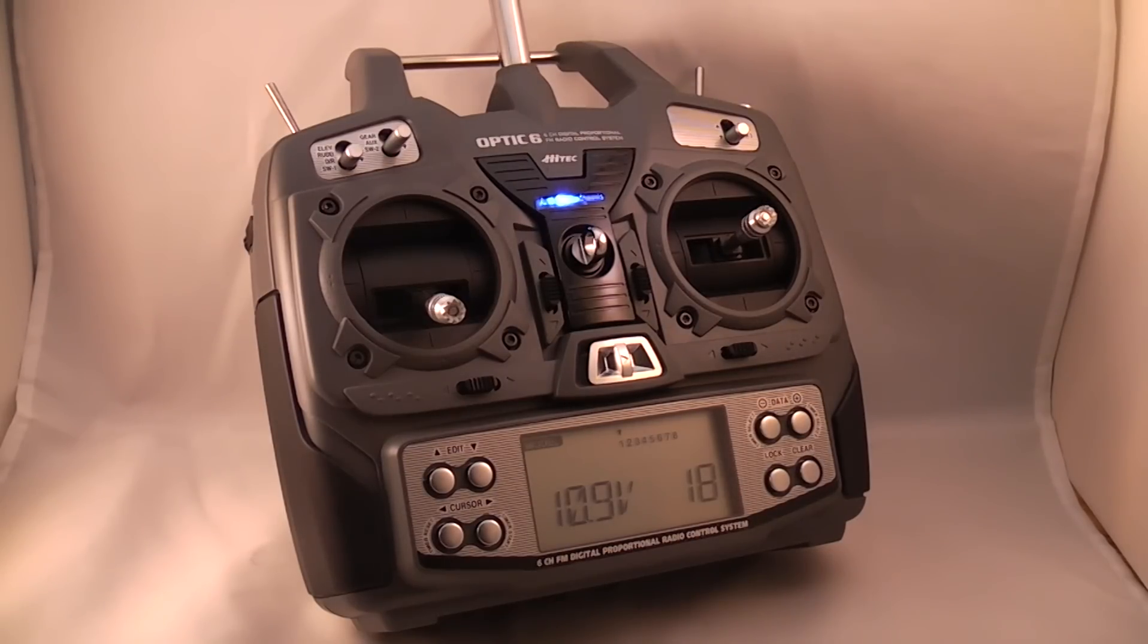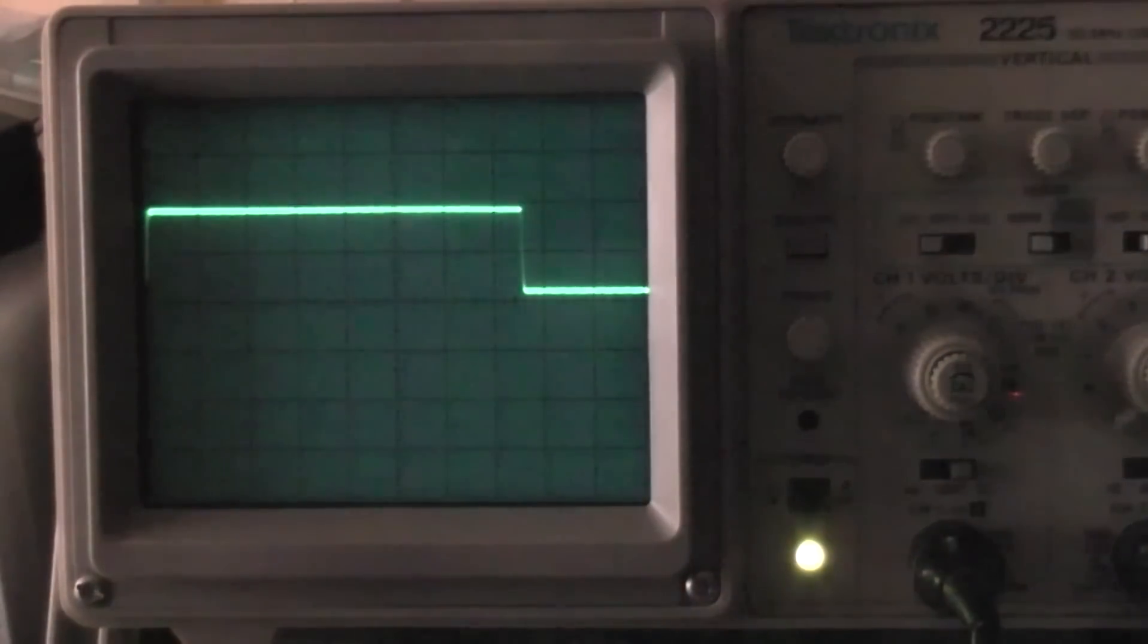A radio control system controls the servos using a series of pulses using a technique known as pulse width modulation, as can be seen in the oscilloscope trace. Longer and shorter pulses instruct the servo as to which position it should be in.